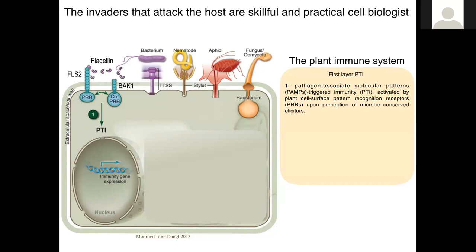One layer is called PTI, PAMP-triggered immunity, and it relies on a surface receptor kinase called PRR — pattern recognition receptor. This receptor can perceive conserved molecules from pathogens, called PAMPs — pathogen-associated molecular patterns.